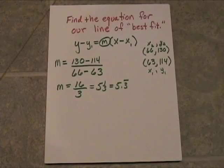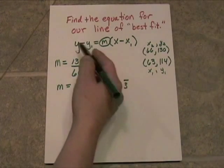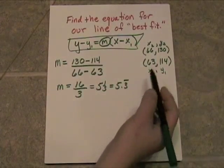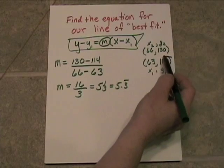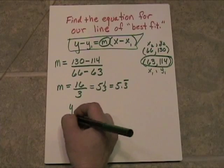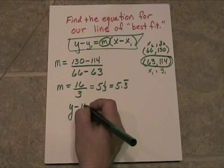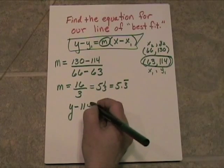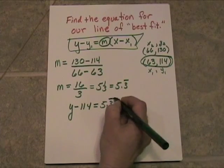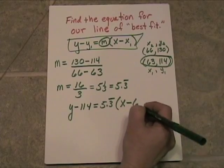So to get our equation, all we have to do is take this slope and plug it up into the point slope form, and we'll use one of these points. It's going to be y minus y sub 1, which is 114, and that's equal to the slope, which is 5.3 repeating, times the quantity x minus 63.